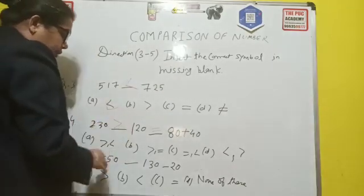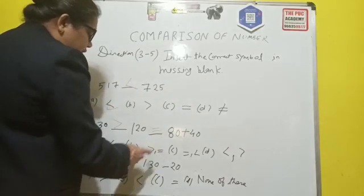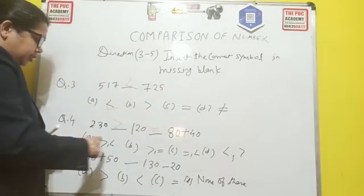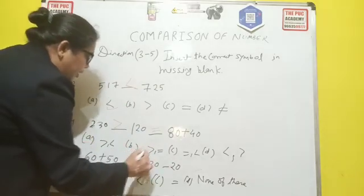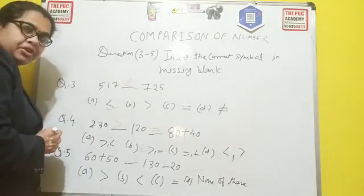So which option is matching like this? First one is your greater symbol. And the second one is equal symbol. So option B is only having this choice. So option B is your correct choice.